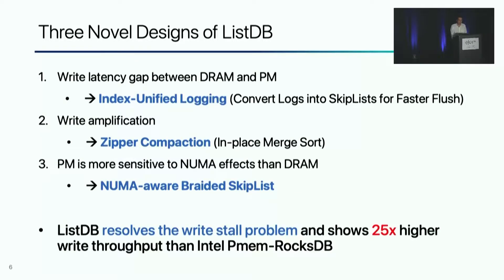Our results show that ListDB resolved the write-stall problem and achieves 25 times higher write throughput than Intel's PMEM RocksDB.